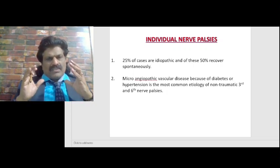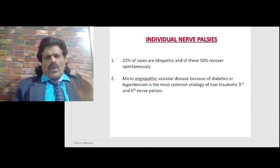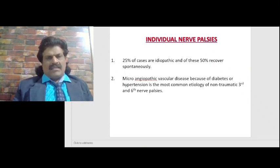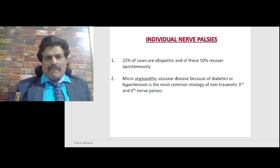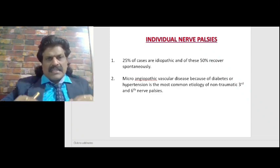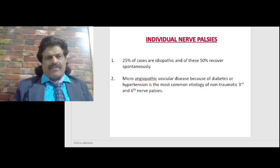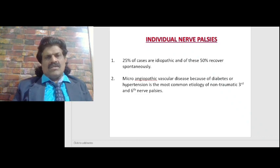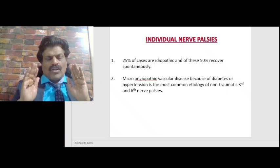We will talk about individual nerve palsies. 25% of cases are idiopathic, and of these 50% recover spontaneously. Microangiopathic vascular disease because of diabetes or hypertension is the most common etiology of non-traumatic third and sixth nerve palsies.